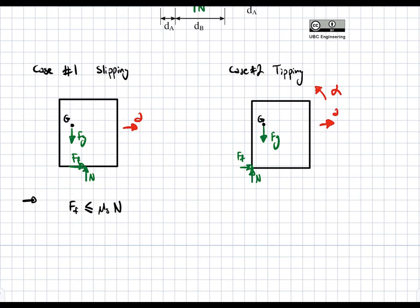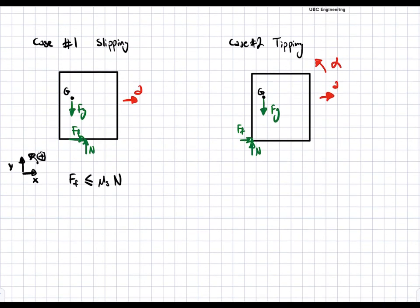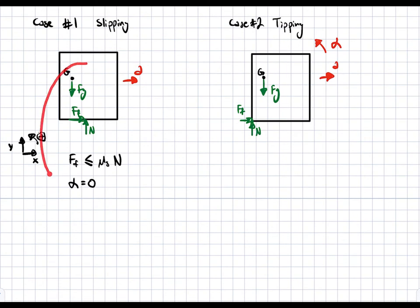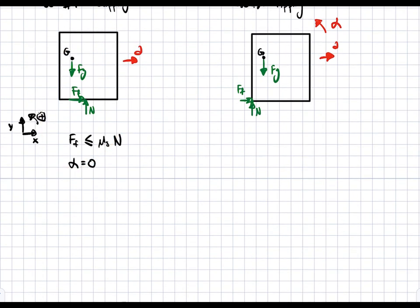I'll draw the coordinate system once: XY with positive rotation counterclockwise. For the tipping case, the condition is that the forces are at the outermost edge, and we have a non-zero alpha. For the slipping case, we noted alpha equals zero. Now let's solve — we want to find the acceleration in each case given Fg and the static friction coefficient.